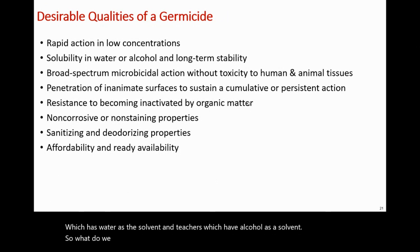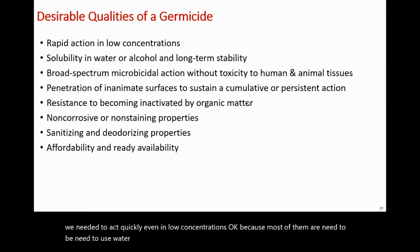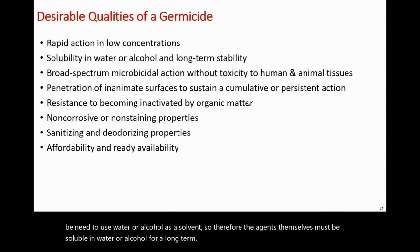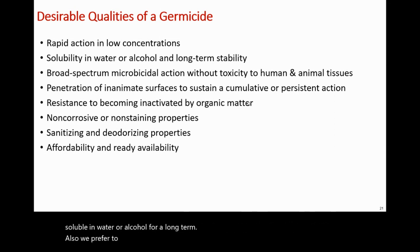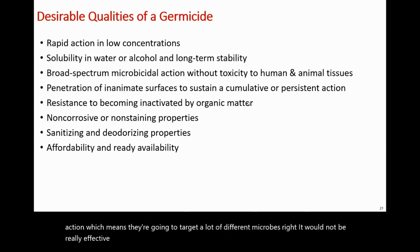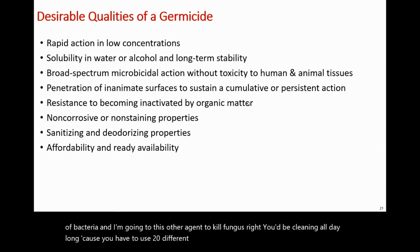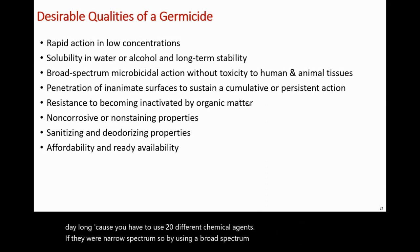What do we need in a germicide — a chemical agent — to make it effective? We need it to act quickly, even in low concentrations, because most of them need to use water or alcohol as a solvent, so the agents themselves must be soluble in water or alcohol. For the long term, we also prefer these chemical agents to be broad spectrum in terms of their microbial action, meaning they target a wide variety of microbes. It wouldn't be effective to need Lysol to kill one type of bacteria, bleach to kill another, and a separate agent to kill fungus — you'd need 20 different chemical agents if they were narrow spectrum.